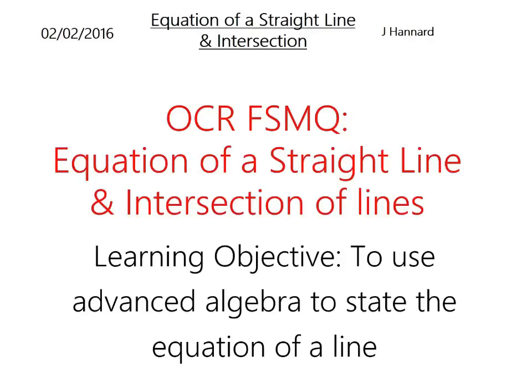Hey guys, Joe back once again with some OCR FSMQ, additional mathematics for students who took their GCSE in year 10 and got an A or A star. Today we are doing the equation of a straight line and the intersection of lines. So it's quite a big episode today, so apologies if it's a bit of a long one, but obviously just watch what you need to. The learning objective today is to use advanced algebra to state the equation of a line, and later on we'll talk about the intersection of lines.